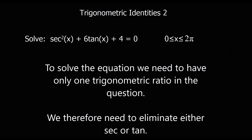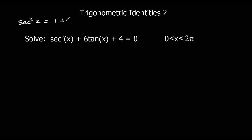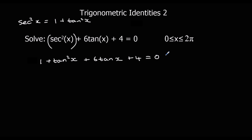Let's look at solving some equations using these. We've got sec²x + 6 tan x + 4 = 0. I can get rid of sec²x because sec²x = 1 + tan²x, so I replace sec²x with 1 + tan²x. That gives us 1 + tan²x + 6 tan x + 4 = 0. Collecting like terms: tan²x + 6 tan x + 5 = 0.